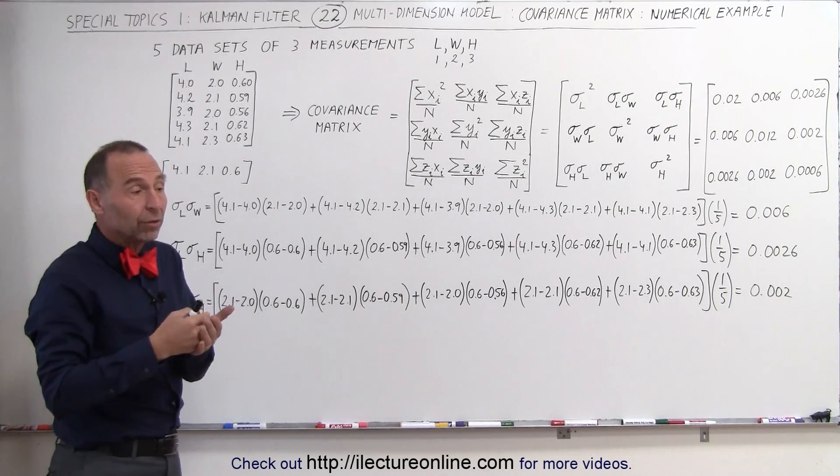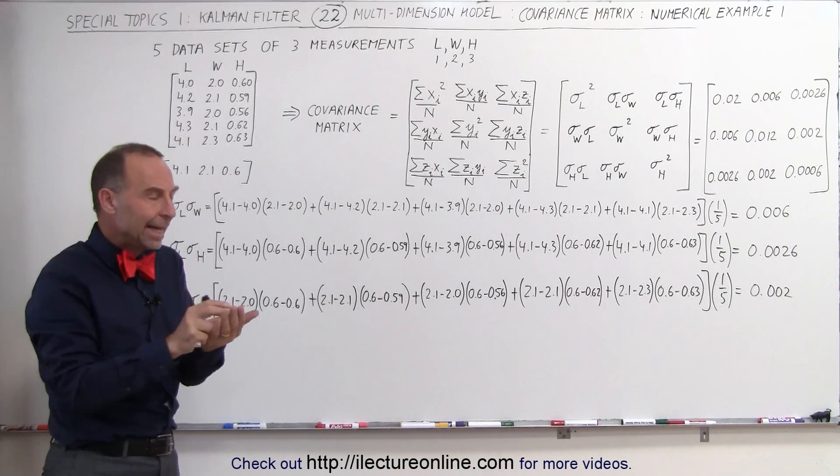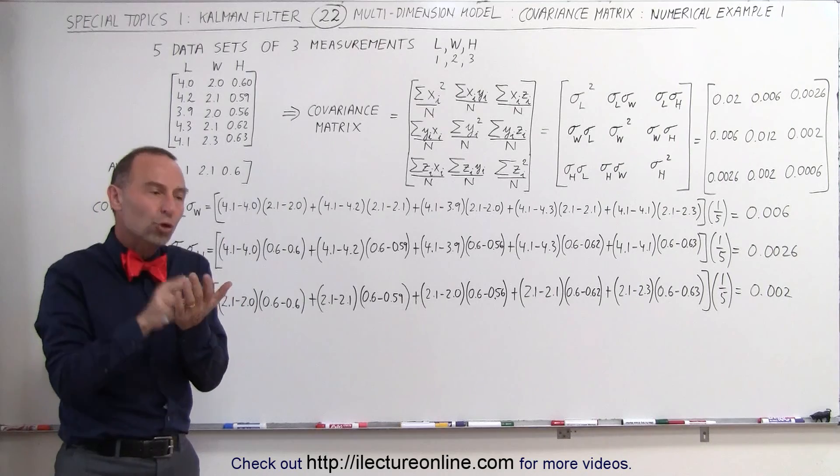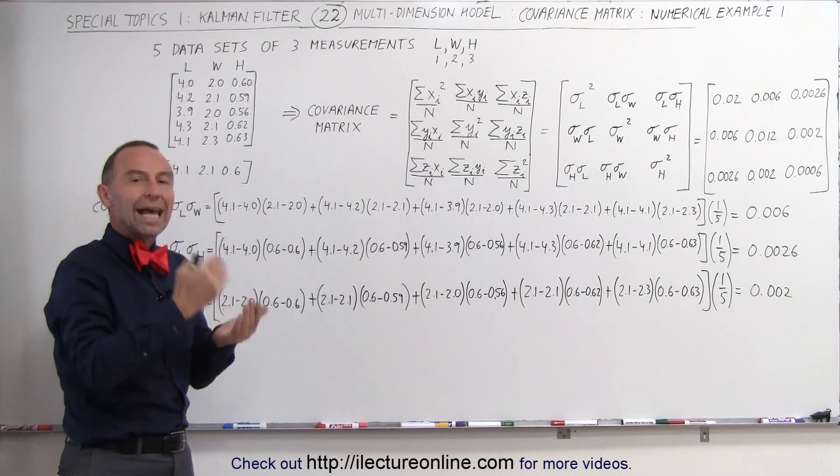What do we adjust it with? Well, of course, we adjust it with the Kalman gain, and the covariance matrix is used to adjust the Kalman gain.